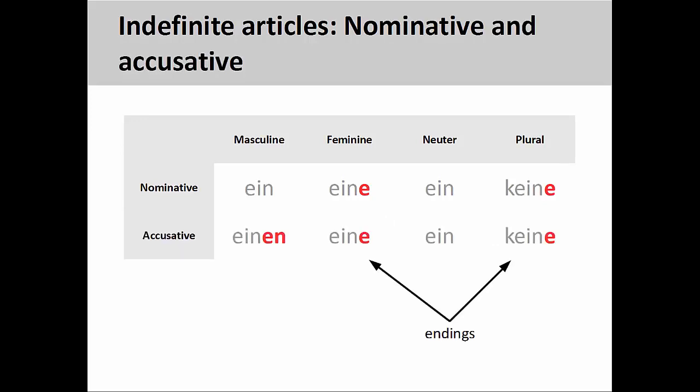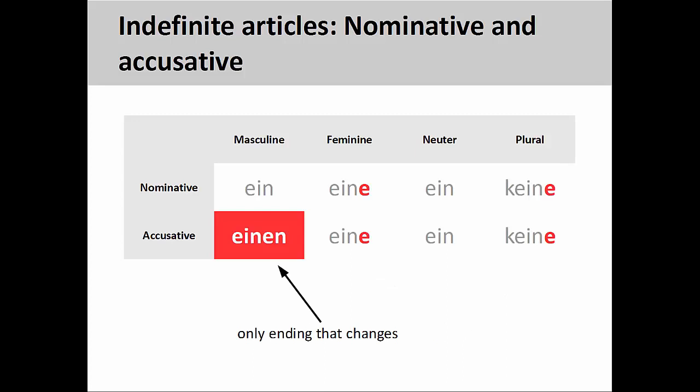The accusative indefinite articles are 'einen' (masculine), 'eine' (feminine), 'ein' (neuter), and 'keine' (plural). Again, the feminine and plural indefinite articles follow the definite article pattern and add an 'e' ending. As is to be expected, the masculine indefinite article is the only one that changes as it moves from the nominative to accusative, adding an 'en' ending.